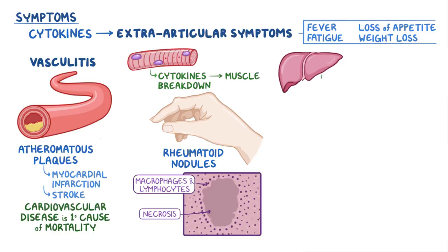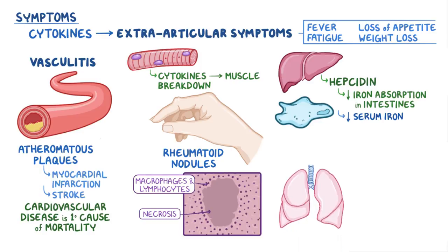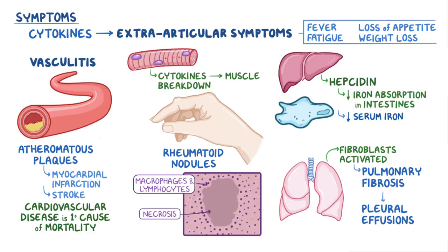In the liver, lots of hepcidin is made, and that causes decreased iron absorption in the intestines, and allows iron to get trapped in the macrophages, leading to lower serum iron levels. In the lung, fibroblasts get activated, causing pulmonary fibrosis, and the pleural lining gets inflamed, leading to pleural effusions.